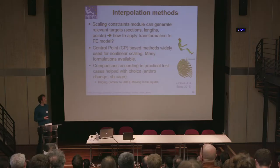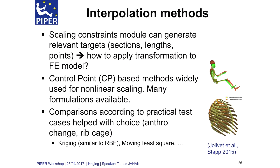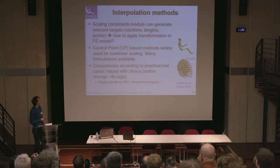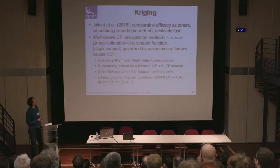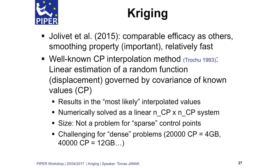Early in the project we did a survey of methods to solve this kind of problem, because of course it's a common problem that has been solved many times. There are many possible methods to do this. We surveyed which of those methods would be suitable for the purposes of scaling the human body model, and the method we selected is kriging, which some of you will probably be familiar with. In comparison with all the other methods, it has similar results for scaling, it has a smoothing property, and it's relatively fast for the large meshes we are dealing with.